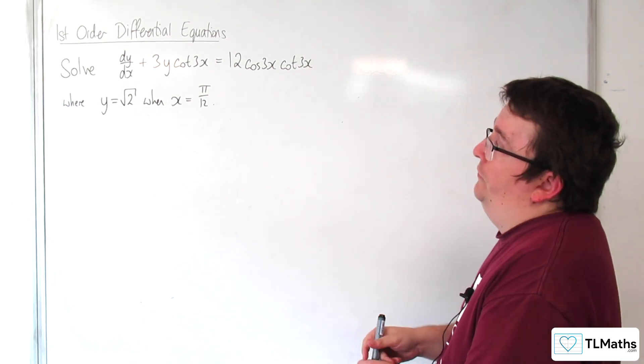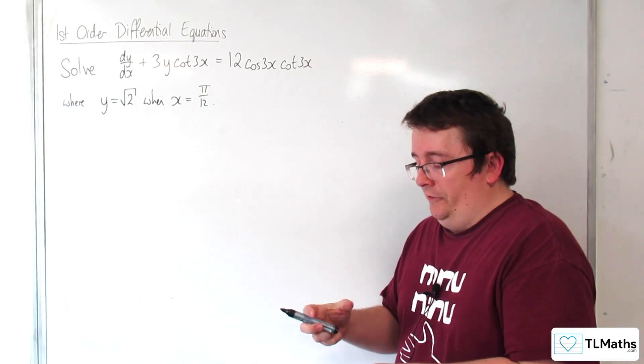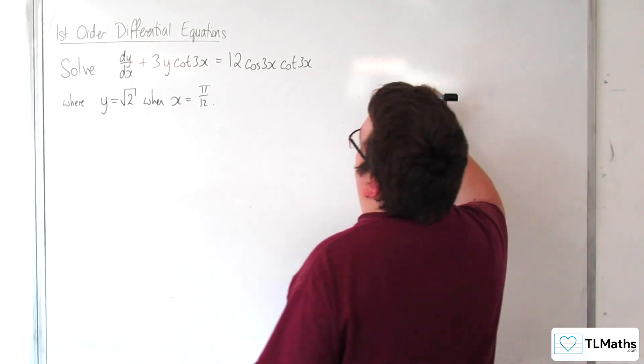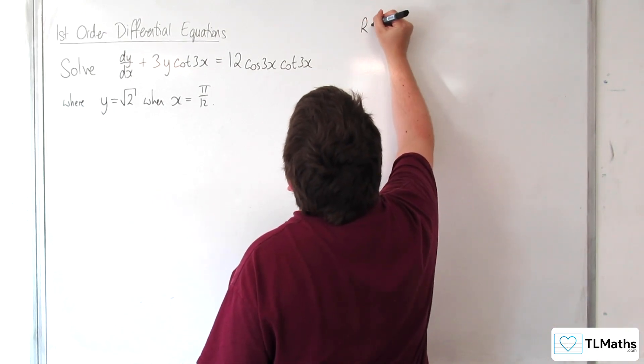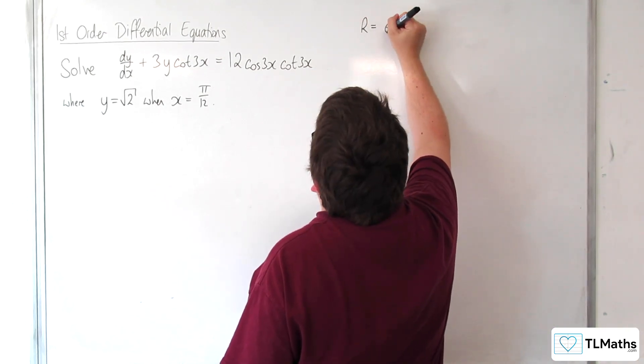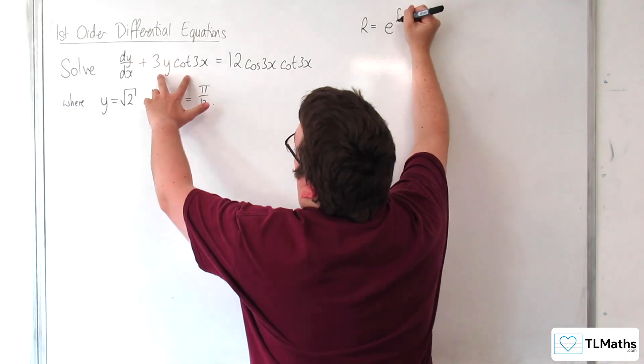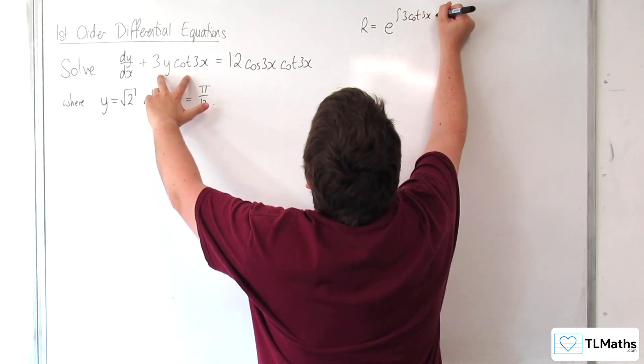This looks quite tough. It's already in standard form, so we can identify that the integrating factor, r, is going to be e to the integral of 3 cot 3x dx.